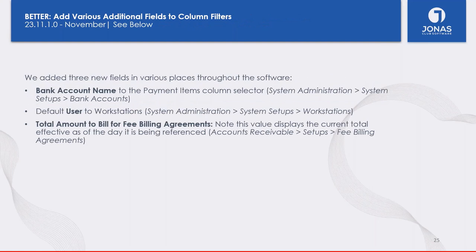We've added a few columns to certain setup grids as quality-of-life improvements. You can now see the bank account name in the Payment Items column selector to confirm you have the right bank account. We've also added the default user to the Workstation grid so you can easily see which user a workstation is assigned to. Additionally, you can now display the total amount for Fee Billing Agreements directly on the grid using the column selector, without having to open each billing agreement.